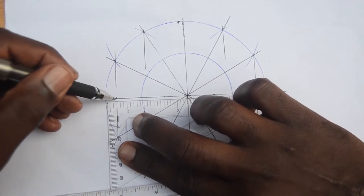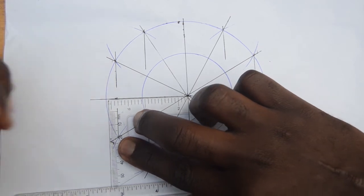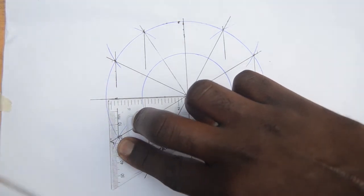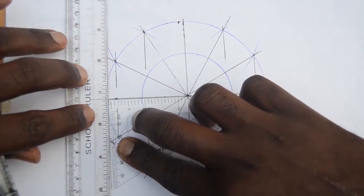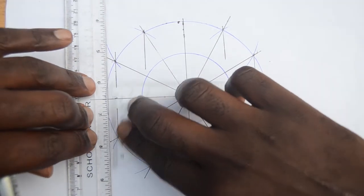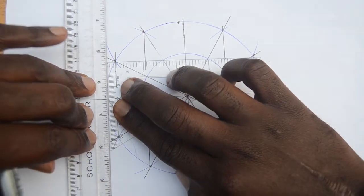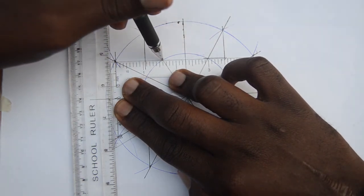And then from the smaller one, draw horizontal lines outward, and these should be parallel to the horizontal axis.